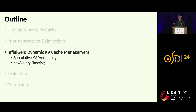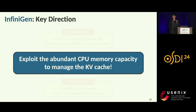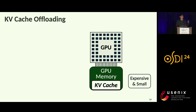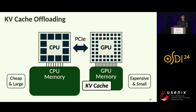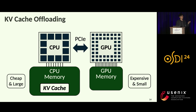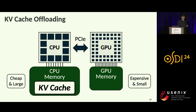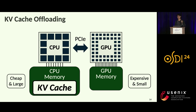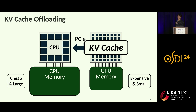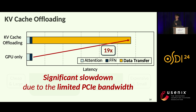Now I'll introduce InfiniGEN. We propose a totally different direction: exploiting abundant CPU memory to maintain the KV cache. Instead of struggling to keep the KV cache in GPU memory, we offload it to CPU memory, which is relatively cheaper and larger, enabling longer sequences of millions of tokens. However, the key challenge is that we need to transfer the KV cache from CPU to GPU for attention computation, and this data transfer causes a significant slowdown due to limited PCIe bandwidth — leading to 19 times slower inference.